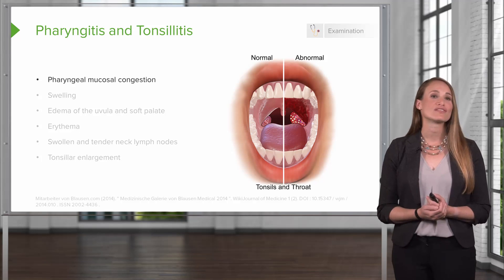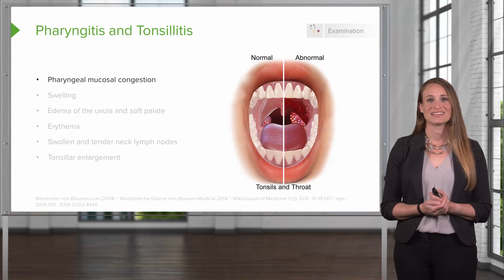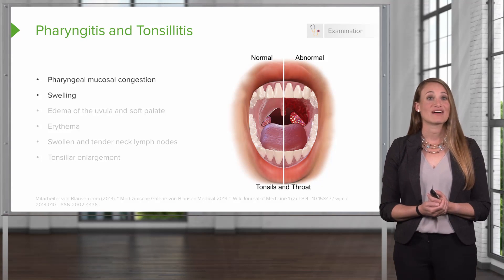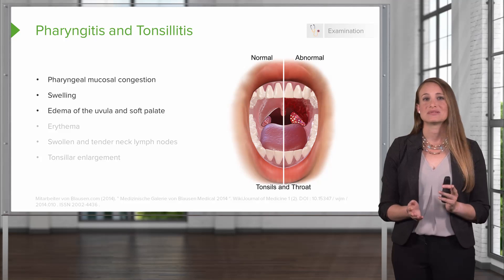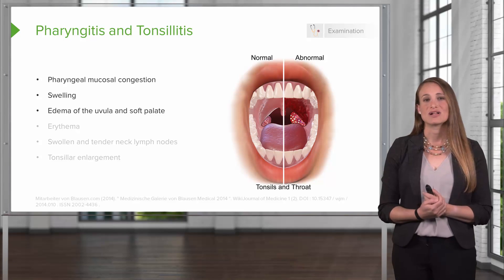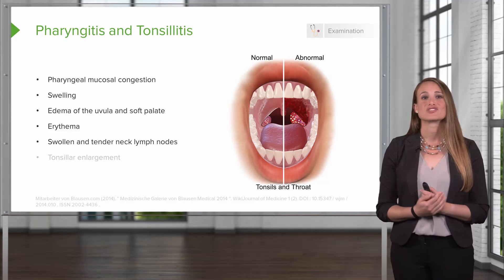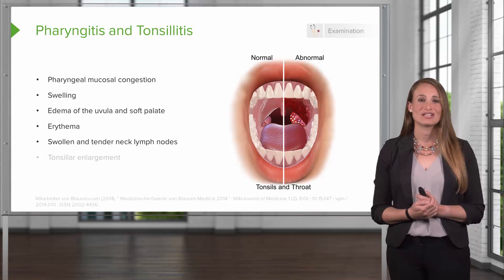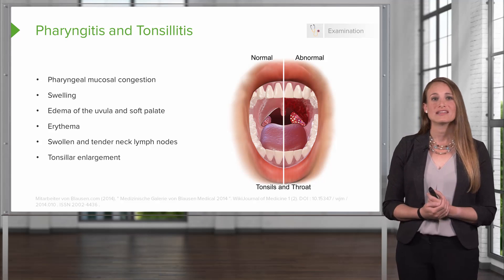In the exam, we look in the throat and you see that the patient may have pharyngeal mucosal congestion. They may have swelling present, and the uvula may be edematous, as well as the soft palate. You're looking for redness, and you're feeling for swollen and tender lymph nodes. When you look in, the tonsils will be enlarged.